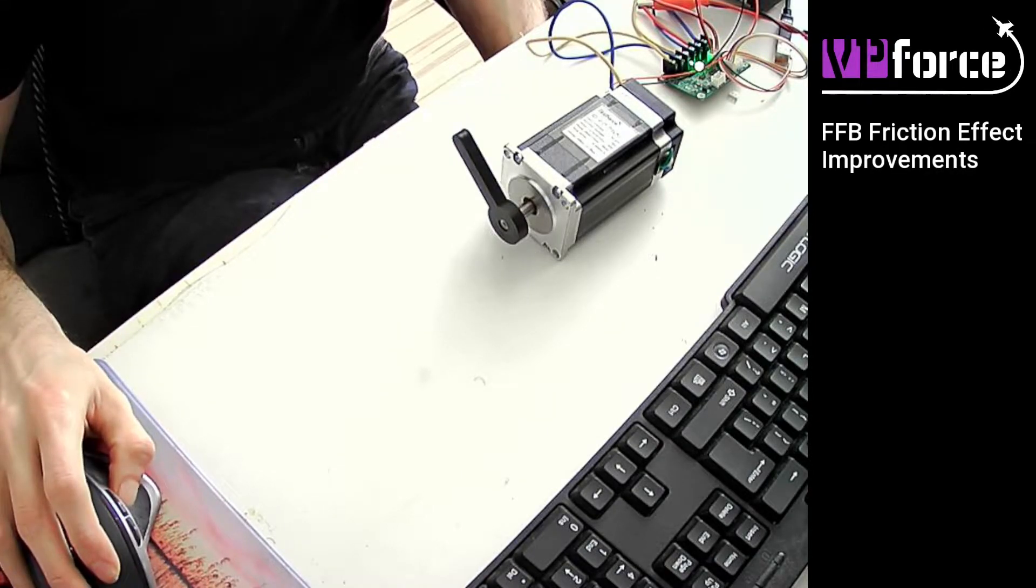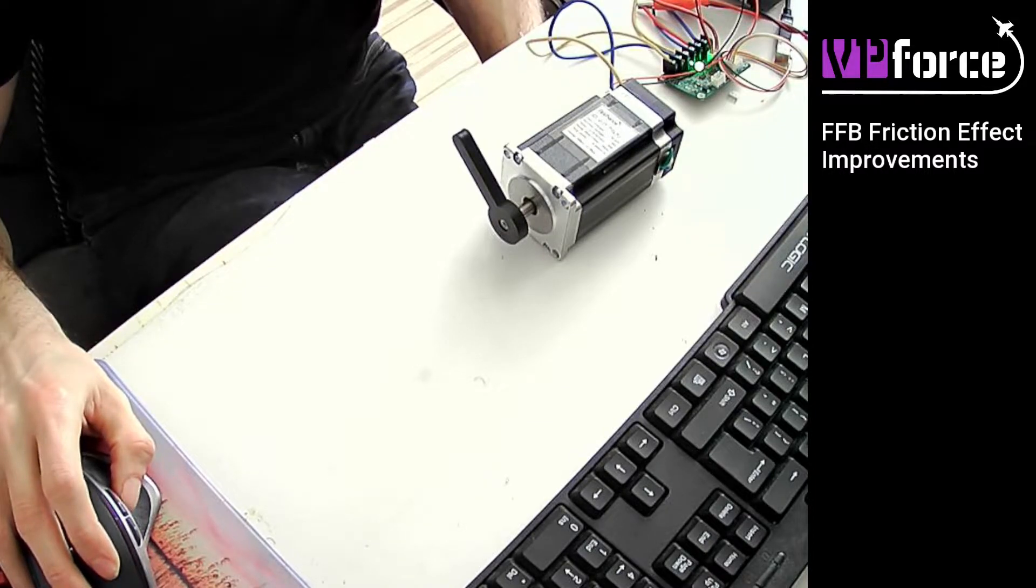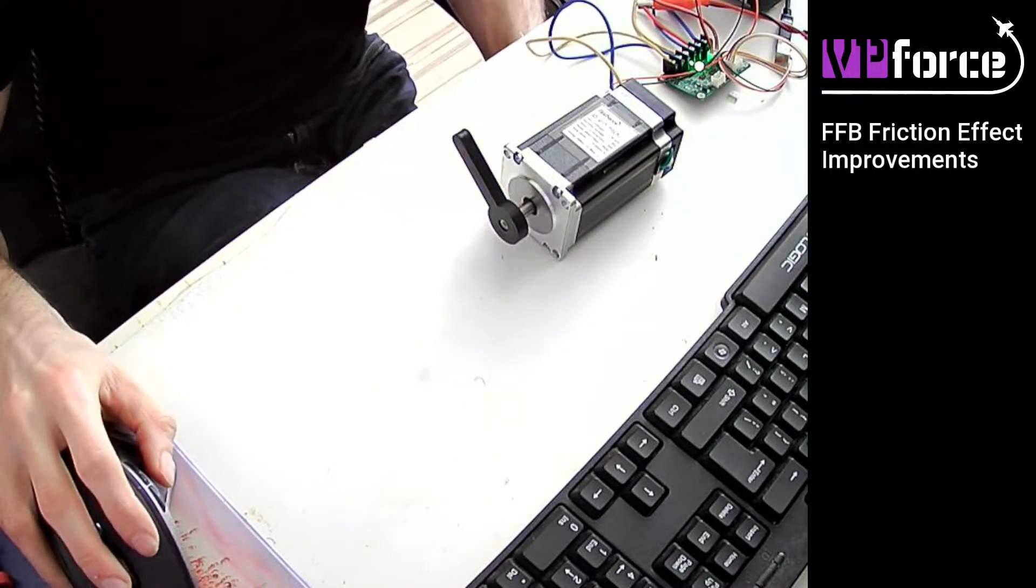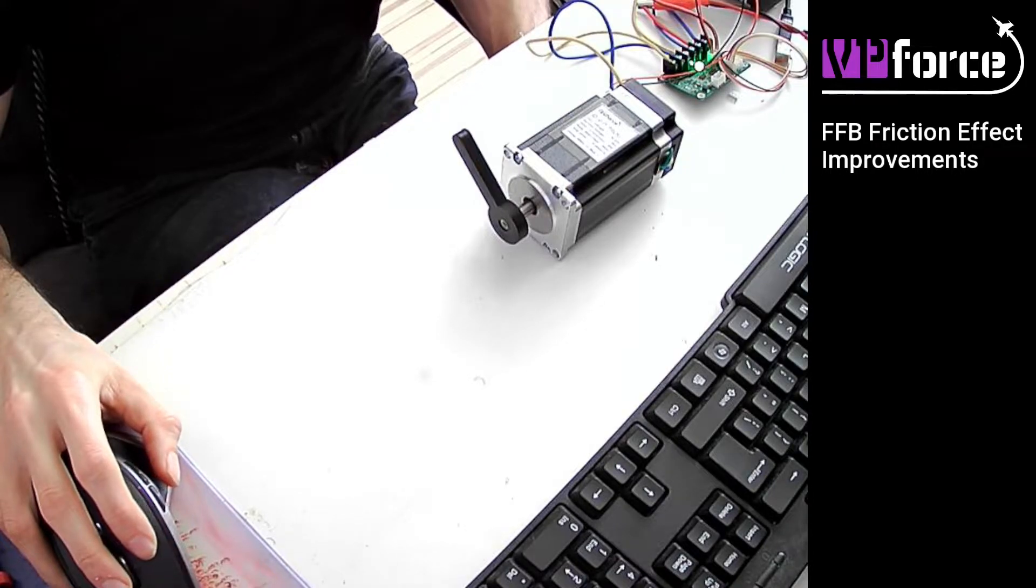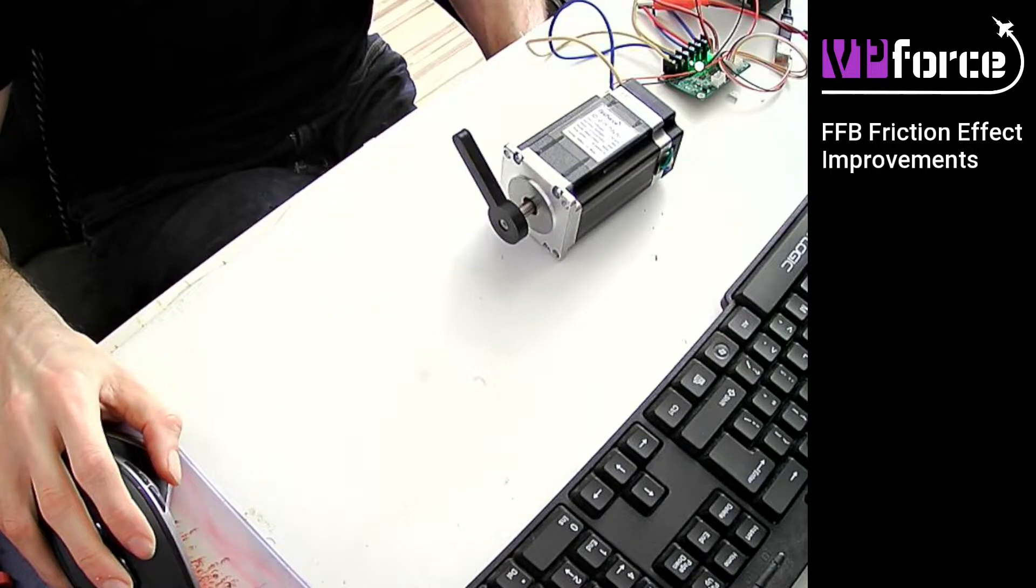The force feedback friction effect simulates mechanical friction. That is, firstly, to overcome the static friction you must exert some force. This force can be configurable. When the static friction is overcome, then the resistance is constant. In contrast with the damper effect, the damper's resistance is proportional to the velocity.